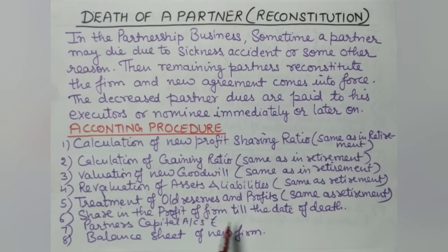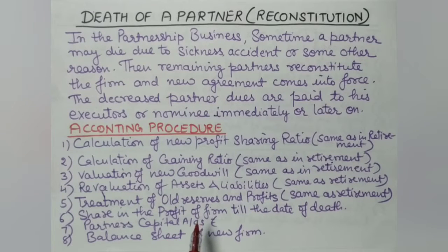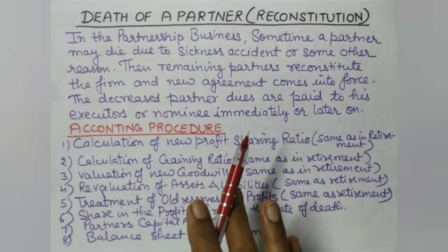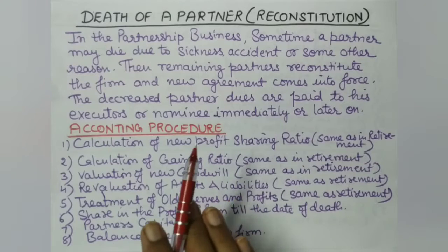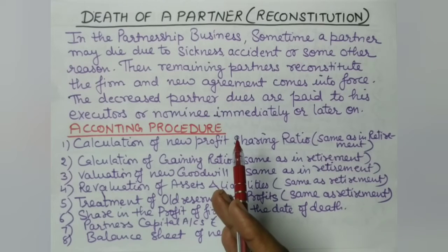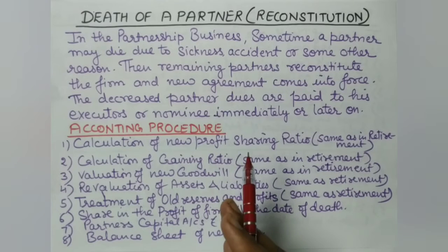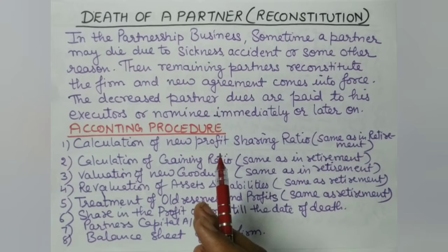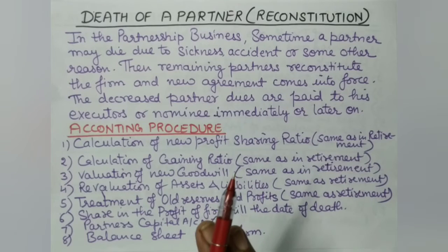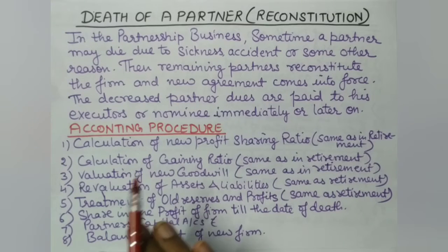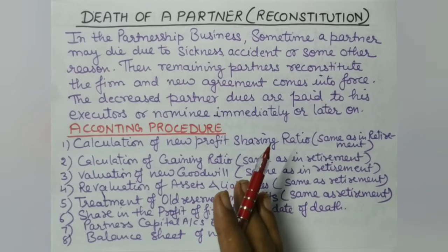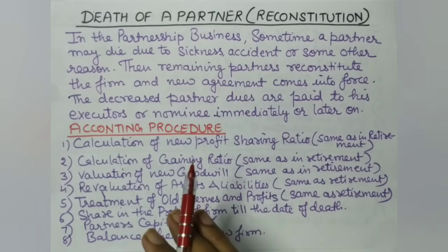Then, the sixth step is the share in the profit of the firm till the date of death. This is a new element that is not present in retirement. In the case of retirement, the partner normally retires at the end of the year — when there is no emergency or health problem. So whatever profit or loss happens, we account for it at year-end. But in the case of death, there is no such fixed time.